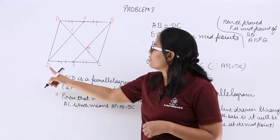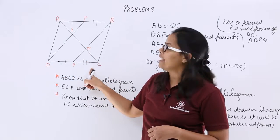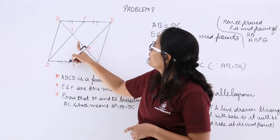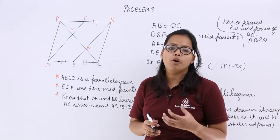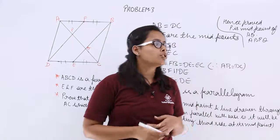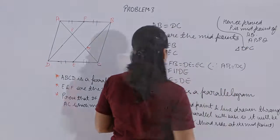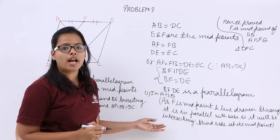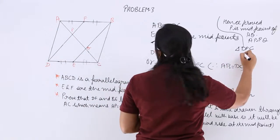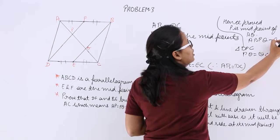Then again, you will do the same thing in triangle CDP. E is the midpoint of side CD and line EQ has been drawn parallel to DP. So this will be intersecting PC at point Q, which will be the midpoint of PC, which means PQ will be equal to QC. Do the same thing for triangle DPC — write the same steps as done in triangle ABQ — and you will see that you are getting PQ is equal to QC. Since PQ is common in both.